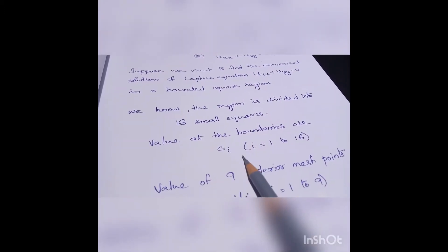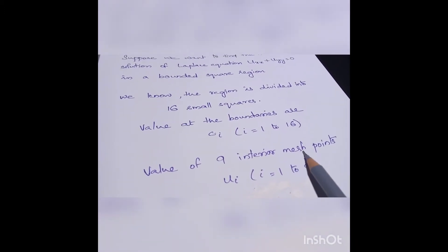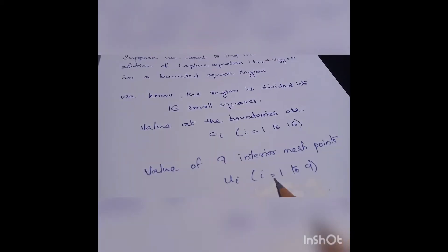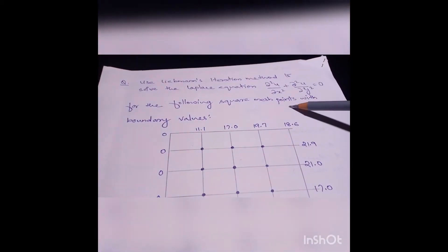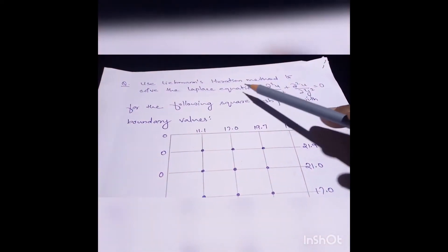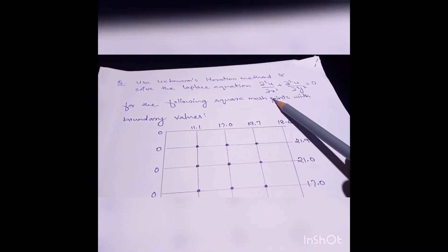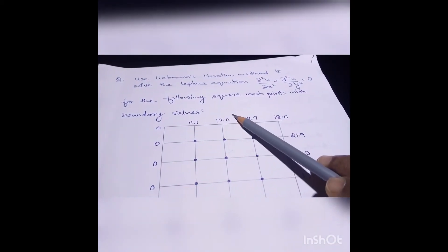So there are 16 small squares: c_i values are obtained at the boundaries and u_i values at the interior mesh points — giving 16 c values and 9 u values. The example problem asks us to use Leibmann's iteration method to solve the Laplace equation.